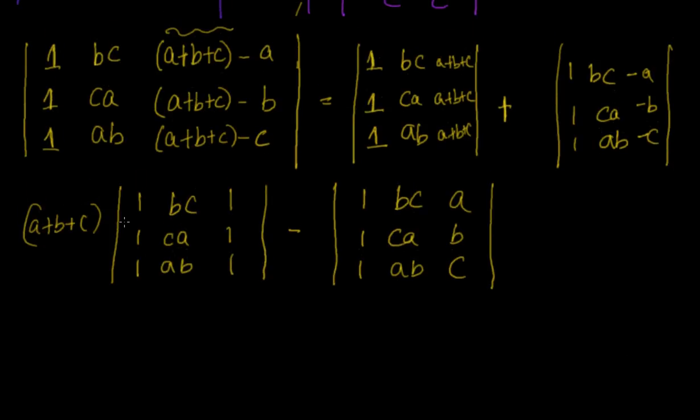Now if I take A+B+C common in the first one I'll have 1,1,1, BC, CA, AB and 1,1,1. I can bring that minus out so I'll have 1,1,1, BC, CA, AB, A,B,C. This is what I have got. Now you can see here that this value is zero. Why? Because two columns are identical. Whenever two rows or two columns are identical the determinant value is zero. Now this is nothing but equal to I have only this one left out.